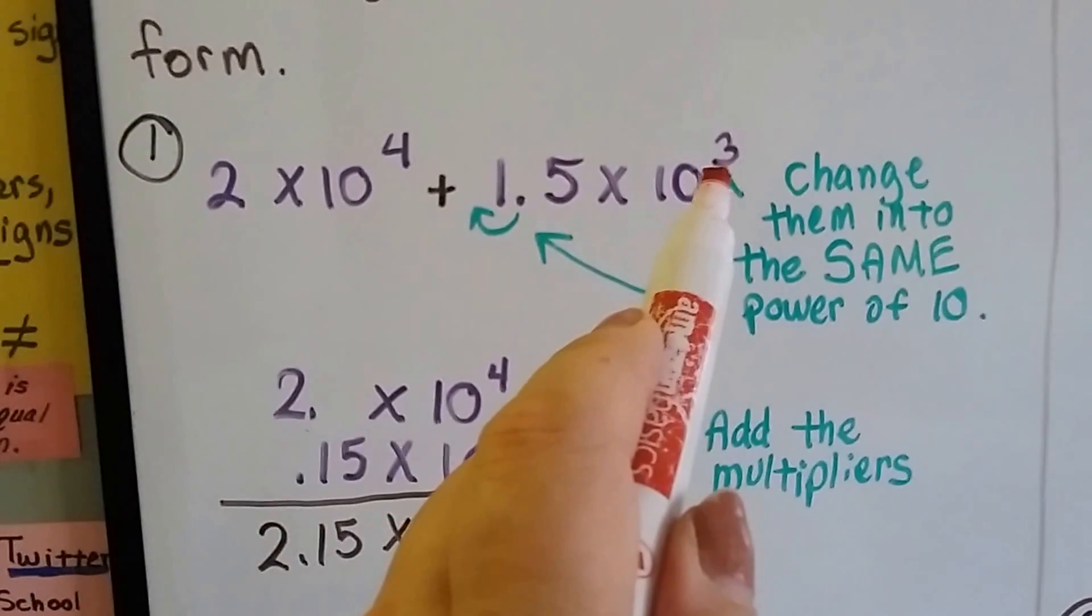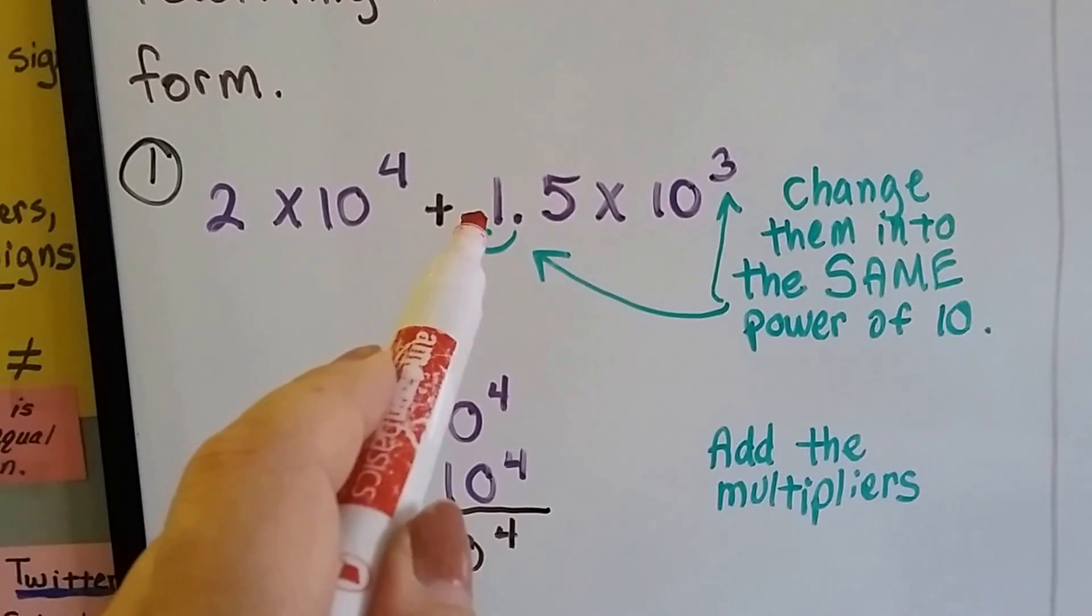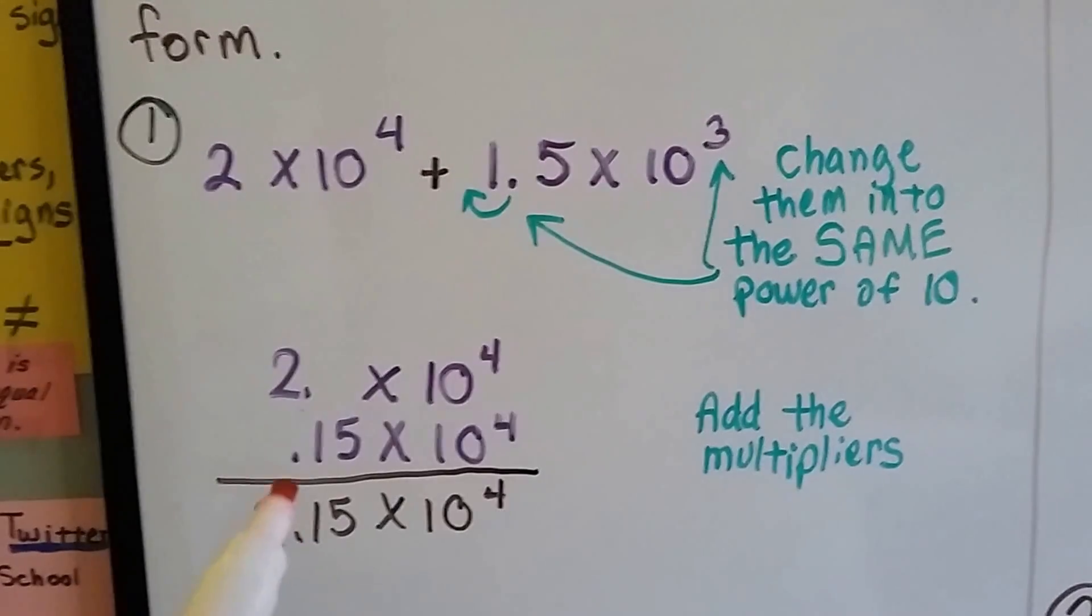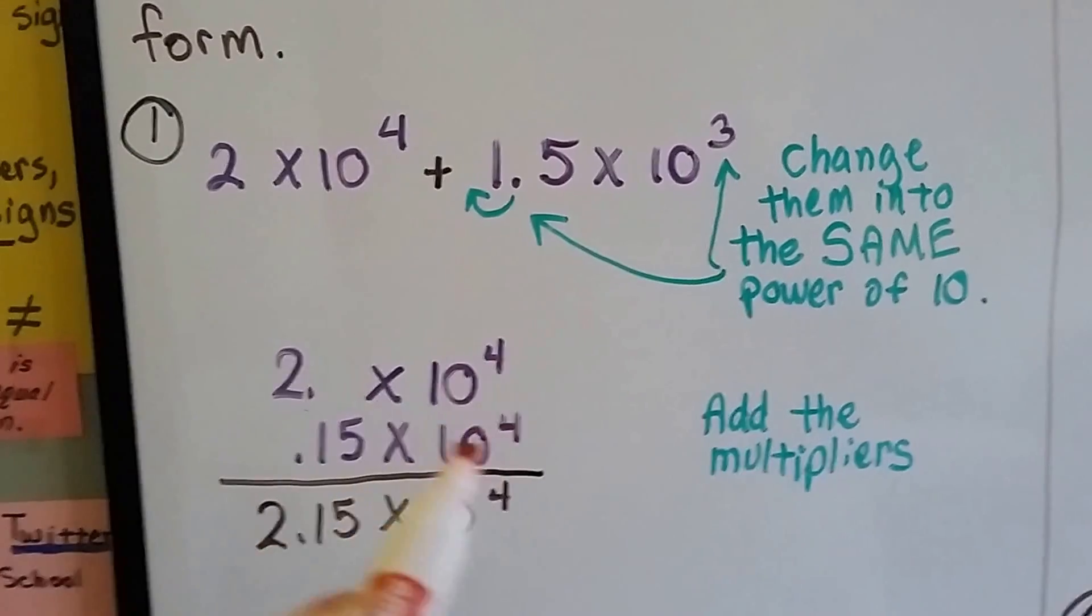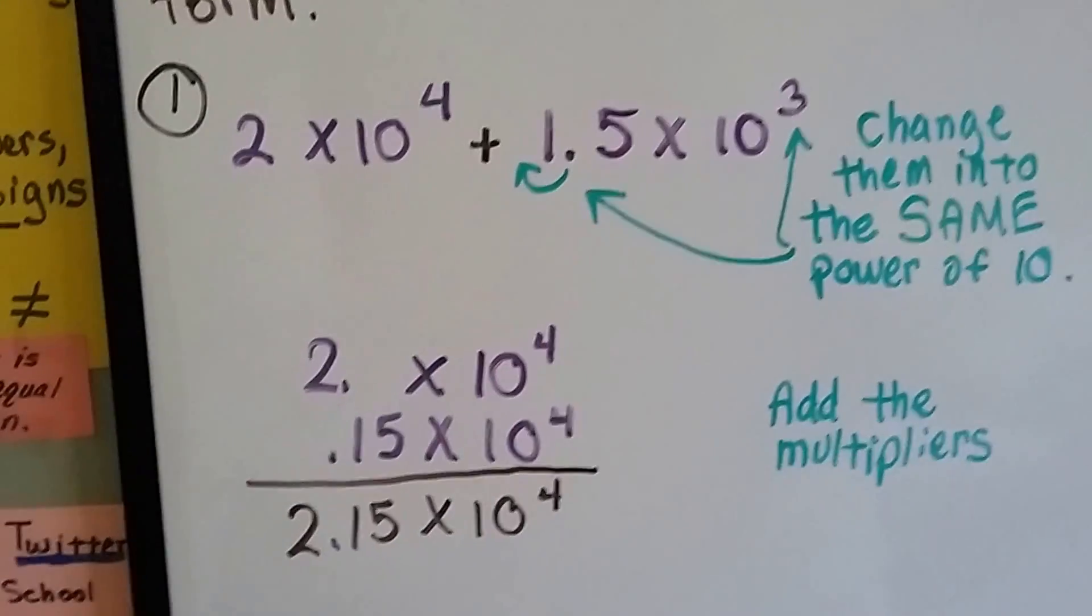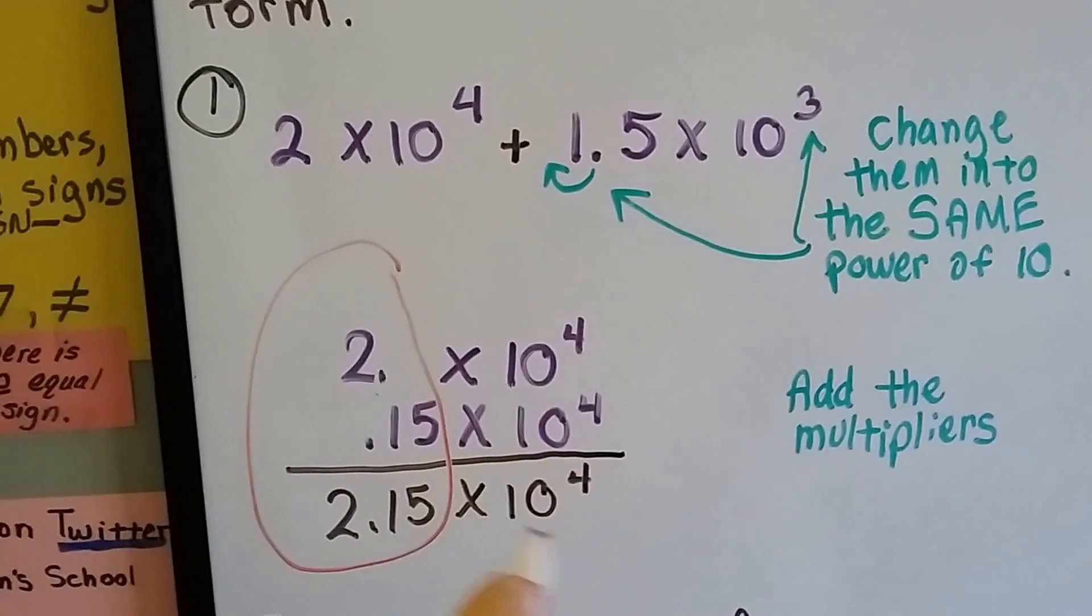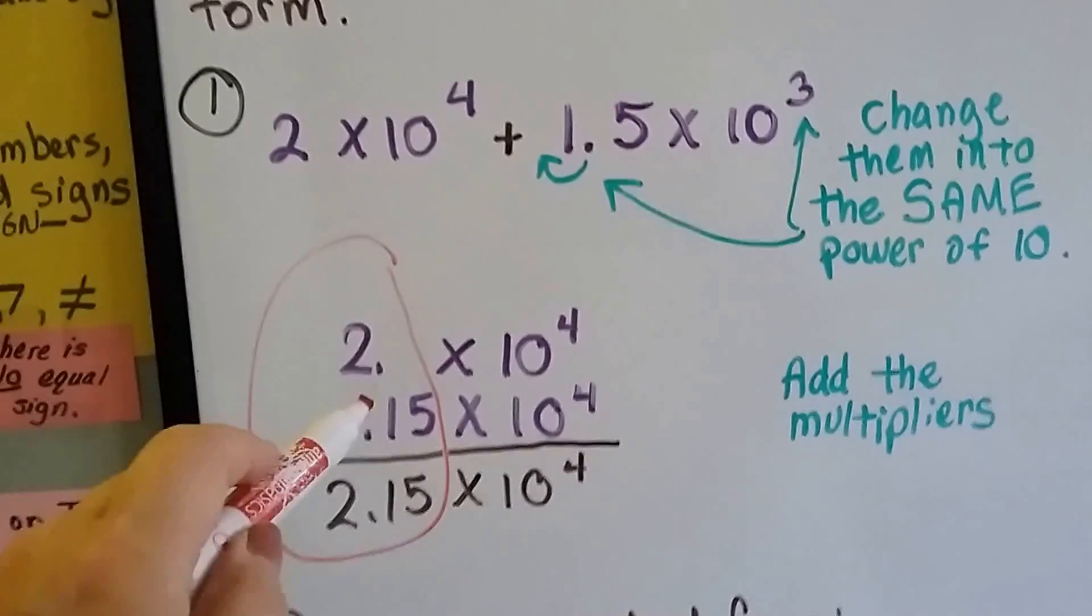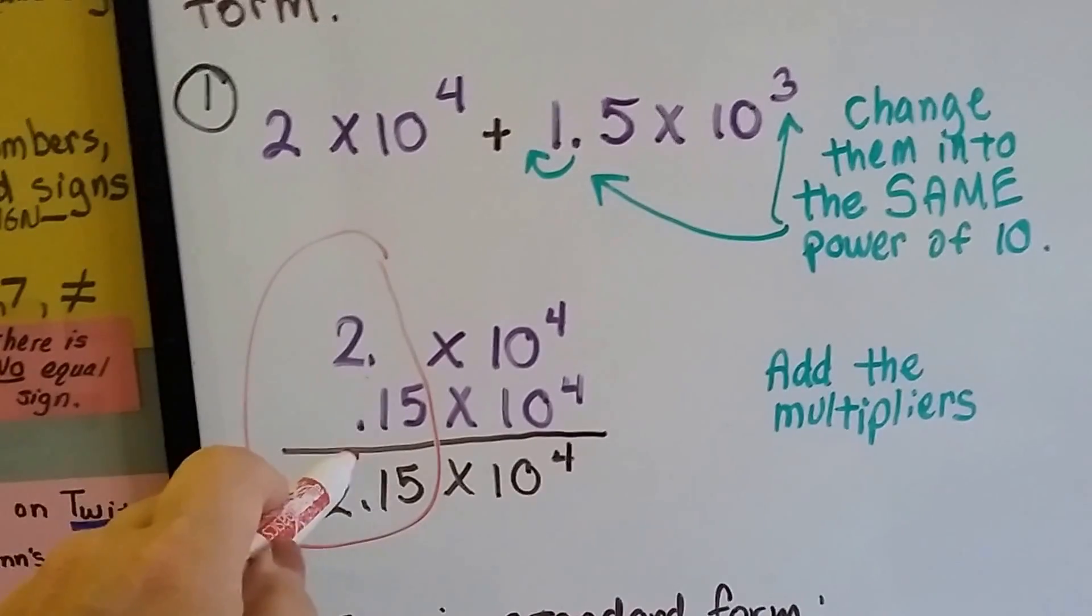So I'm going to change this one to a 4 by moving this decimal point forward in front of the 1 temporarily so I can do my addition. That becomes .15 times 10 to the 4th power. Now my powers are the same, I can add them up. I add this section, ignore these—they're going to stay the same—and I add the 2 to the .15 and I get 2.15. I just add the multipliers.